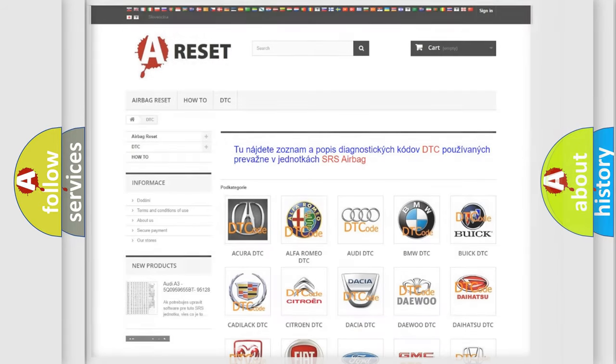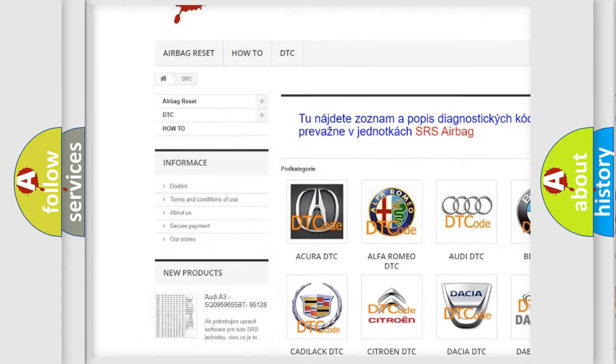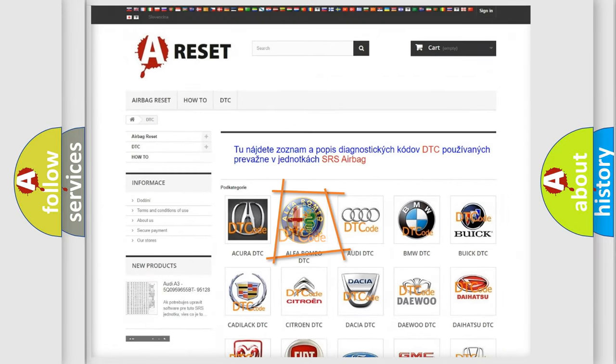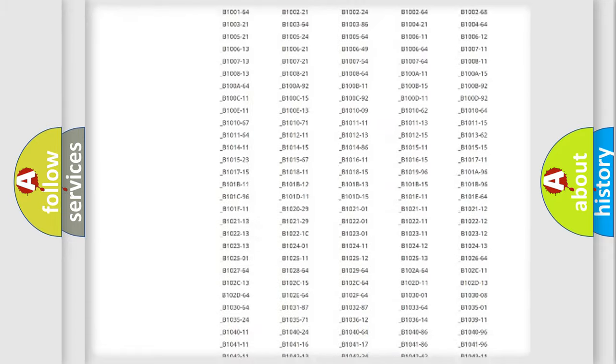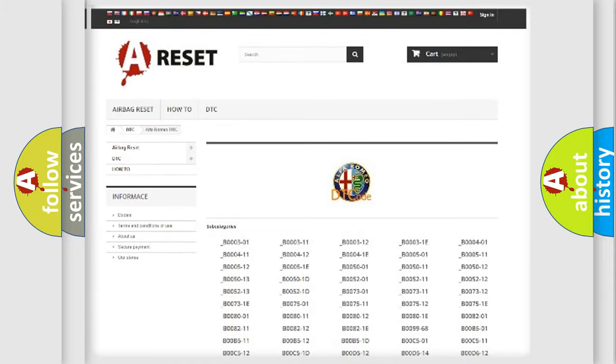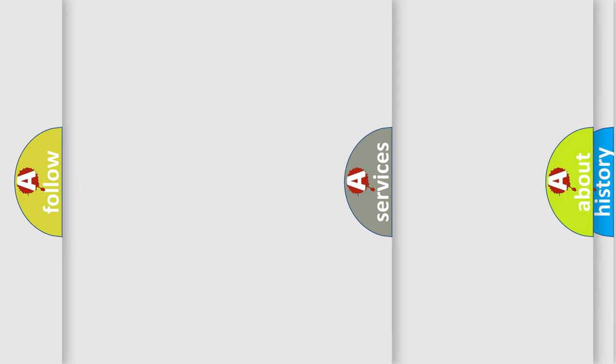Our website airbagreset.sk produces useful videos for you. You do not have to go through the OBD2 protocol anymore to know how to troubleshoot any car breakdown. You will find all the diagnostic codes that can be diagnosed in Alfa Romeo vehicles. Also, many other useful things.